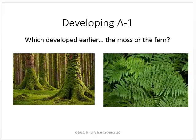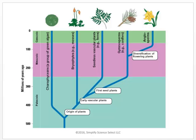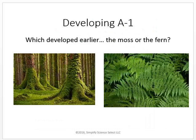Here's a developing question: which developed earlier, the moss or the fern? According to the cladogram, it is the moss that developed earlier. Even looking at it, we see simpler, more efficient structures, whereas the fern has more complex vascular systems.